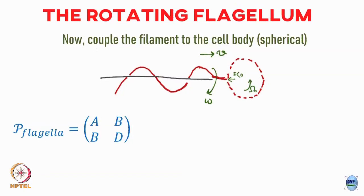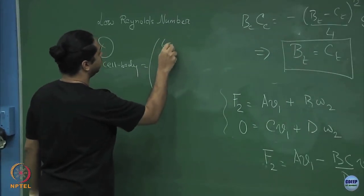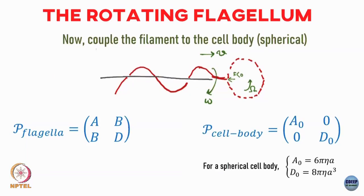Correspondingly, I will have a propulsion matrix for the cell body. For simplicity, assume the cell body is a sphere. For a sphere: A_naught = 6πηR, B = C = 0, and D_naught = 8πηR³. So these are my two propulsion matrices — one for the flagellum and one for the cell body.